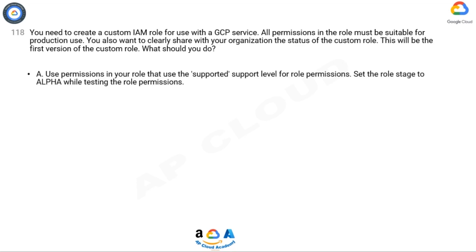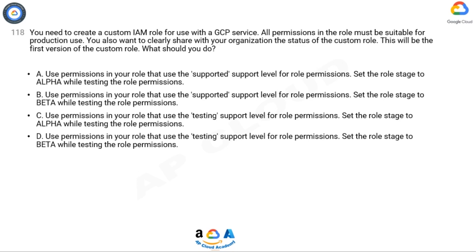A. Use permissions in your role that use the supported support level for role permissions. Set the role stage to alpha while testing the role permissions. B. Use permissions in your role that use the supported support level for role permissions. Set the role stage to beta while testing the role permissions.